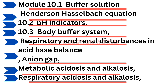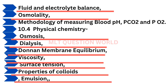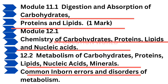Then buffer solutions, the Henderson-Hasselbalch equation, pH indicators, body buffer systems, respiratory and renal disturbances, metabolic acidosis and alkalosis, and respiratory acidosis and alkalosis. Fluid and electrolyte balance, osmolality, blood pH, osmosis, dialysis, Donnan membrane equilibrium, viscosity, and surface tension.